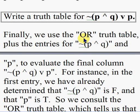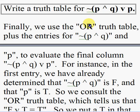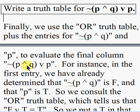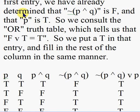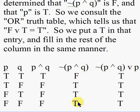Now we need to evaluate the OR P step to finish the truth table for NOT(P AND Q) OR P. We use the OR truth table, combining the entries for NOT(P AND Q) from column 4 and the entries for P from column 1, to evaluate the final column. In the first entry, NOT(P AND Q) is false and P is true, so we consult the OR truth table.